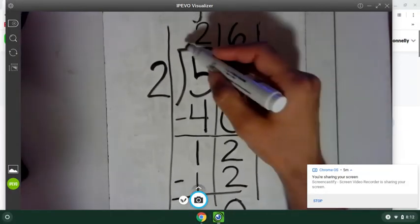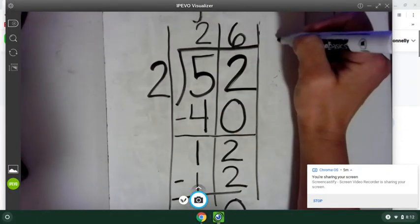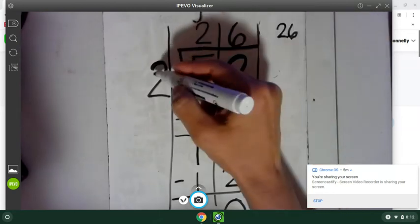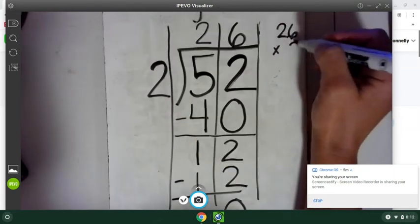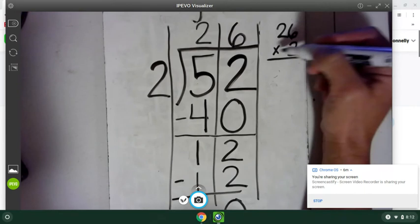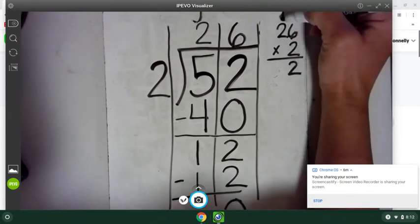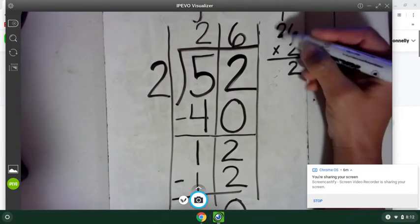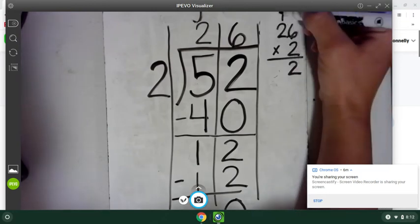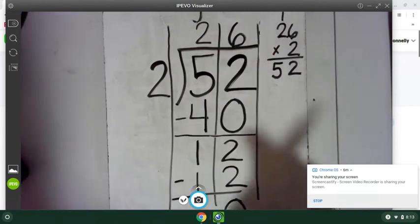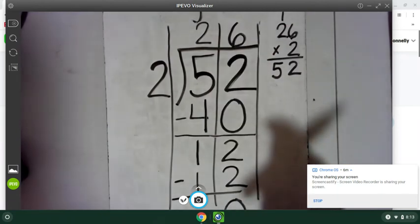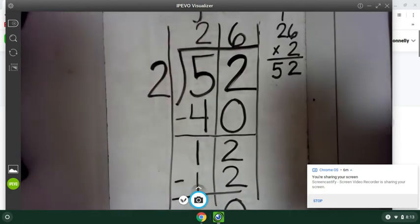So again, let's check ourselves. I say 26 times two, two, and that two times six is 12. Bring down my two, carry my one. Two times two is four, plus one is five, which is the number inside our box. And so it works out.